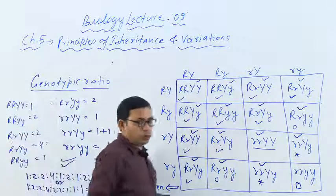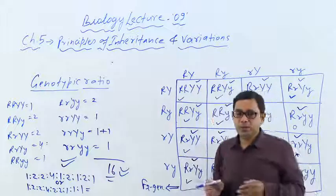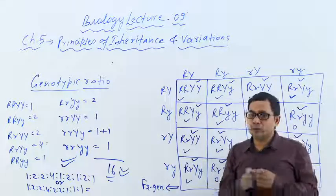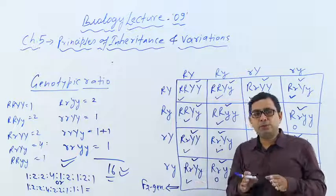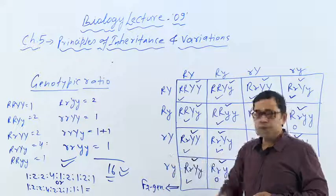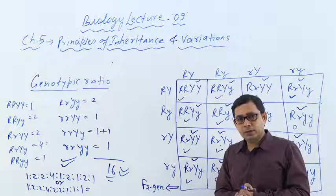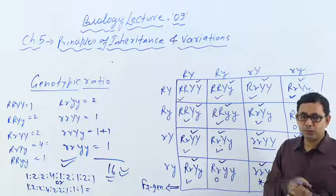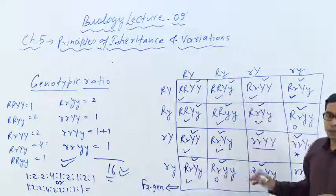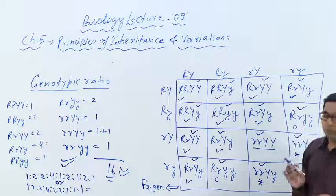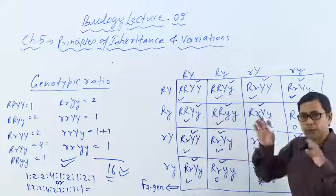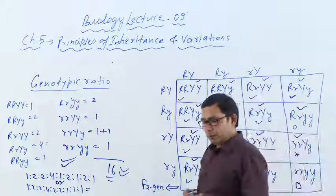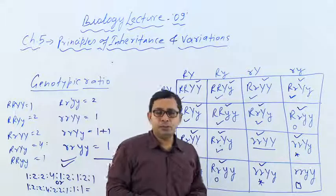So the genotypic ratio comes to 1:2:2:2:4:2:2:1:1:1 totaling 16. This is correct. Although genotypic ratio is rarely asked in board exams, it is very interesting. Please practice this 2-4 times because it is pure mathematics of biology - one mistake anywhere and the whole effort is wasted. If this comes in board exam it carries 5 marks - do it correctly for full marks. We will continue with questions in the next lecture. Thank you very much.